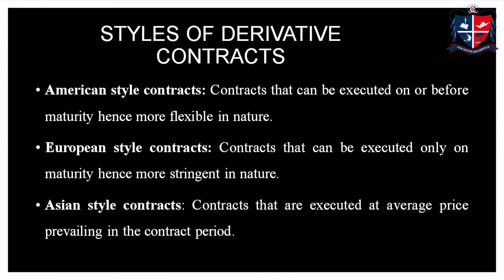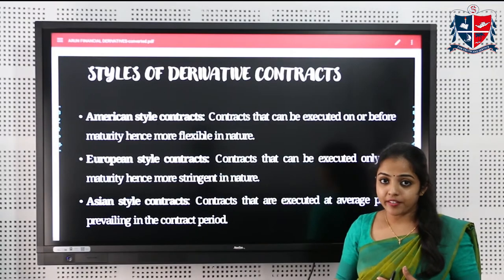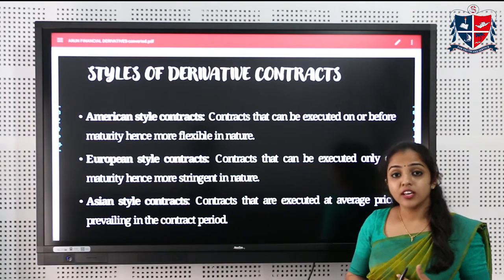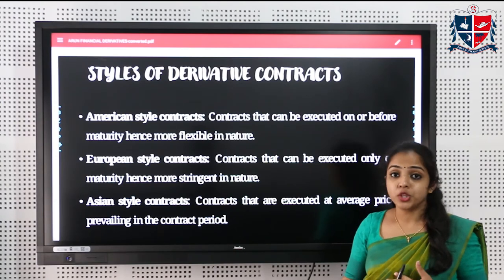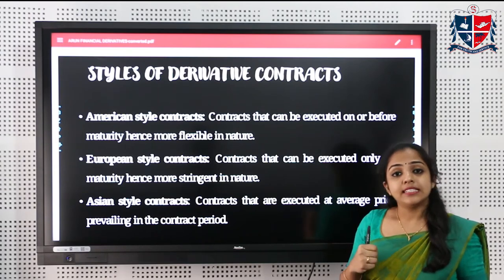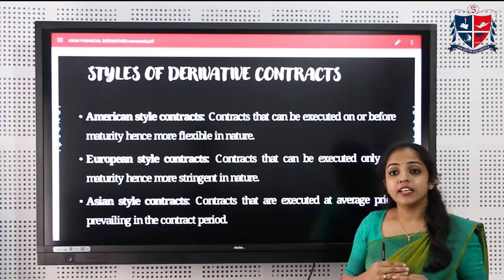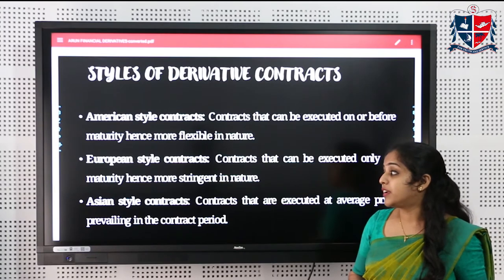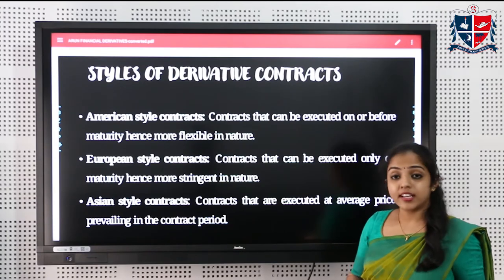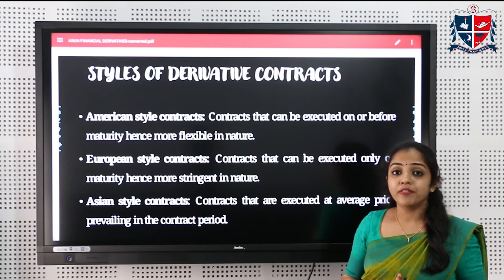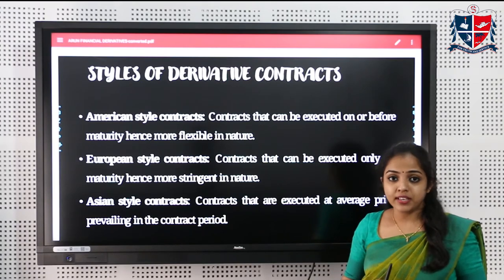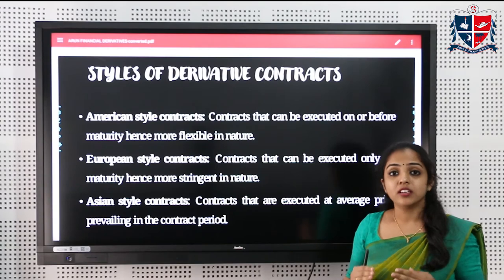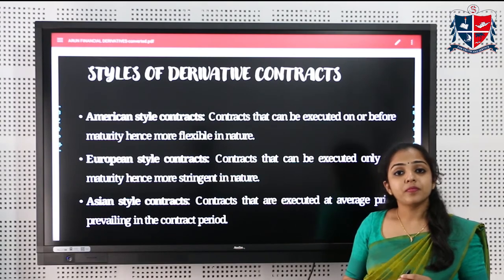There are three styles of derivative contracts. First is the American style, where the contract can be executed on or before the maturity date, making it more flexible. Second is the European style, where the contract can only be executed at the time of maturity. Third is the Asian style, where the contract is executed at an average price or average date prevailing over a particular period.